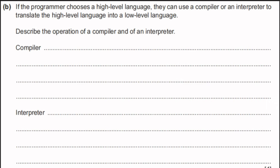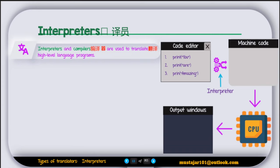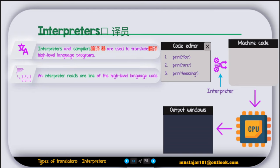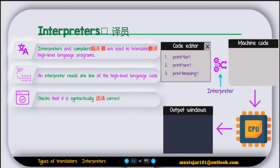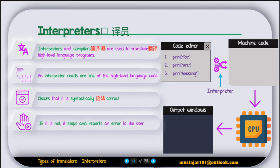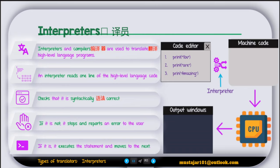Part B: if a programmer chooses a high-level language, they can use a compiler or interpreter to translate it to low-level language. Interpreters and compilers both translate high-level language programs like C, C++, or Python into machine code. An interpreter reads one line of code, checks it is syntactically correct, and if not, stops and reports an error. If correct, it executes the statement and moves to the next line — interpreting each line separately.